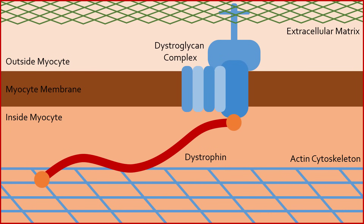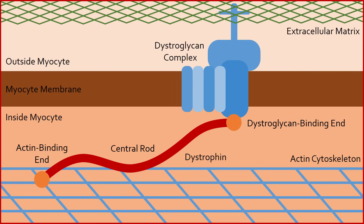Dystrophin has three important areas: the actin binding end, which attaches to the cellular skeleton; the central rod; and the dystroglycan binding end, which attaches to the dystroglycan complex within the membrane that is anchored to the extracellular matrix.